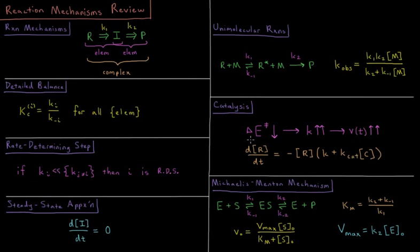So the change in concentration of our reactant is equal to the negative concentration of the reactant times the rate constant of the traditional pathway plus the catalytic rate constant times the concentration of the catalyst. And since this catalytic rate constant is so much smaller even a small concentration of our catalyst can often result in a dramatic increase in the speed of this reaction.